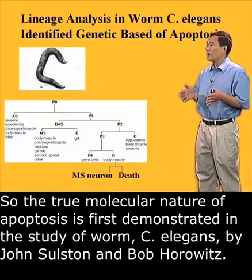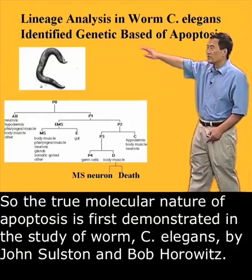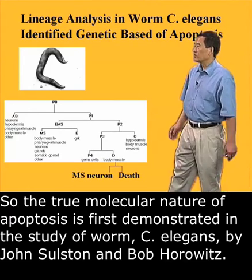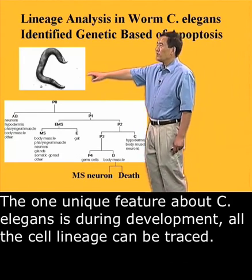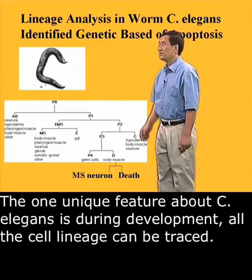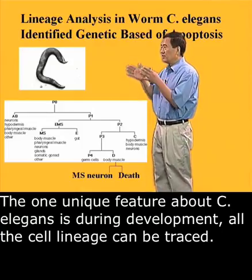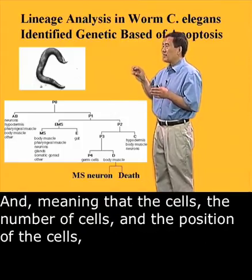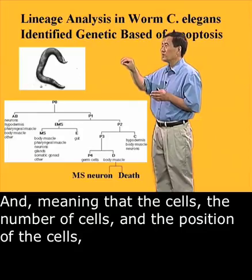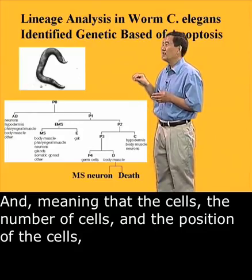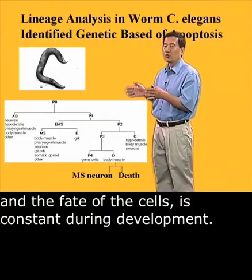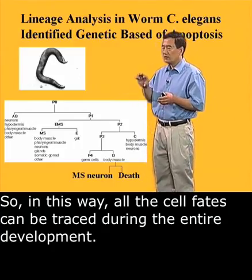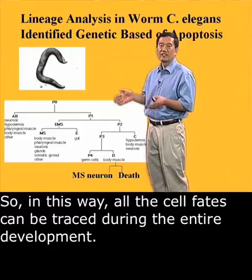The true molecular nature of apoptosis was first demonstrated in studies of C. elegans by John Sulston and Bob Horvitz. One unique feature of C. elegans is that during development, all its cell lineage can be traced — meaning the number, position, and fate of the cells is constant during development. In this way, all cell fates can be traced throughout the entire development.